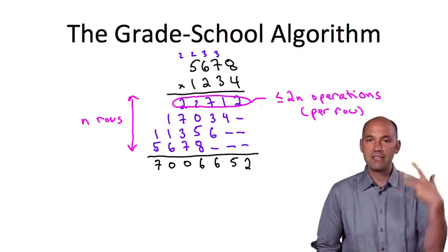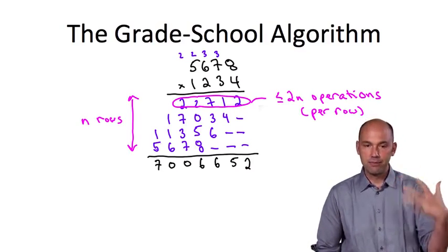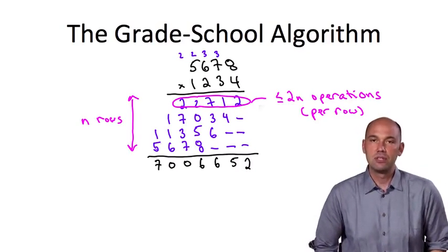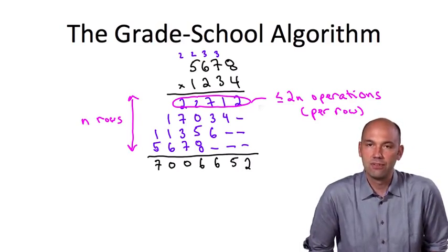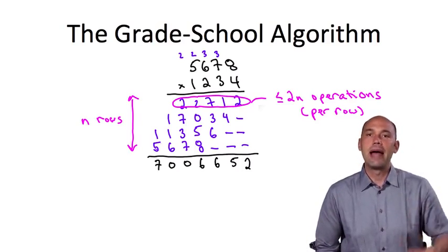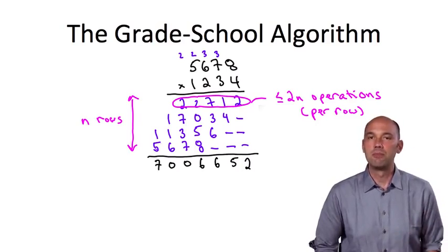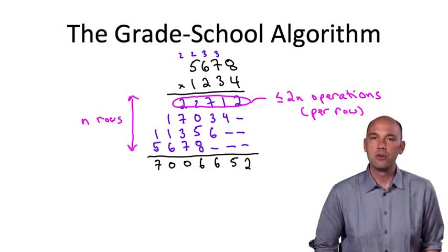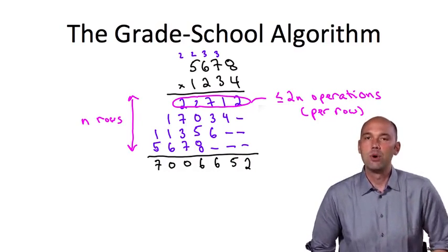Now we're not done at that point. We still have to add all of those up to get the final answer, in this case 7,076,652. And that final addition requires a comparable number of operations, roughly another 2n squared at most operations.